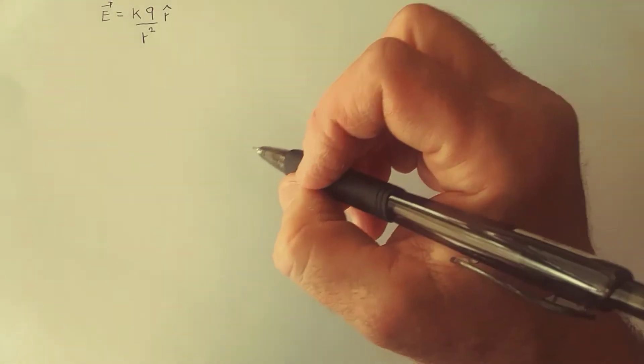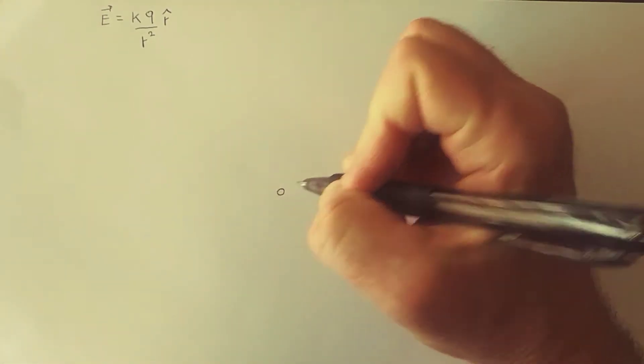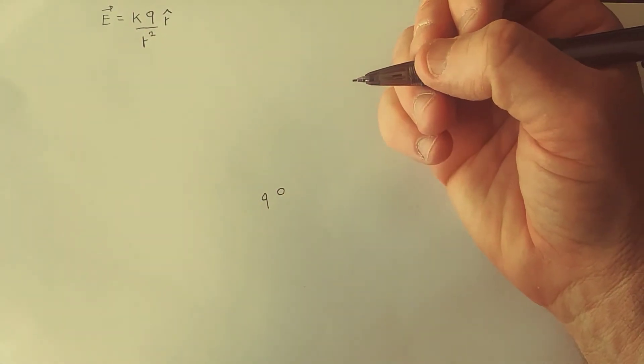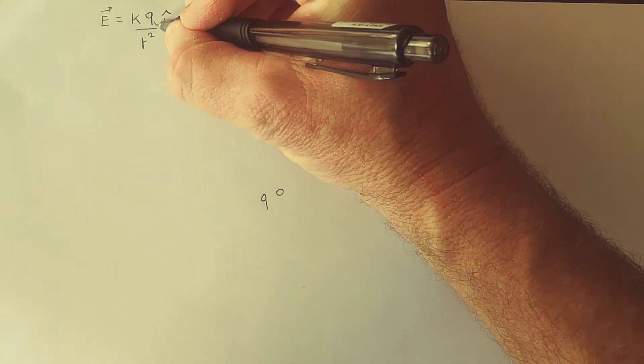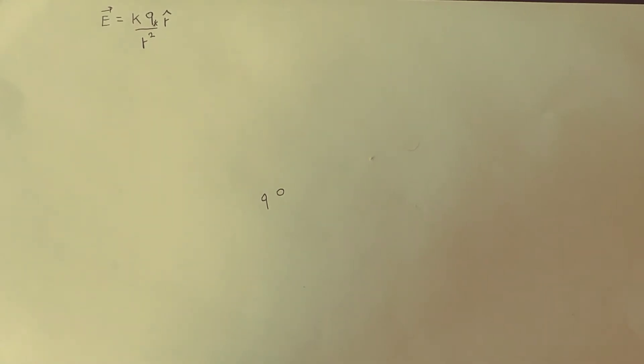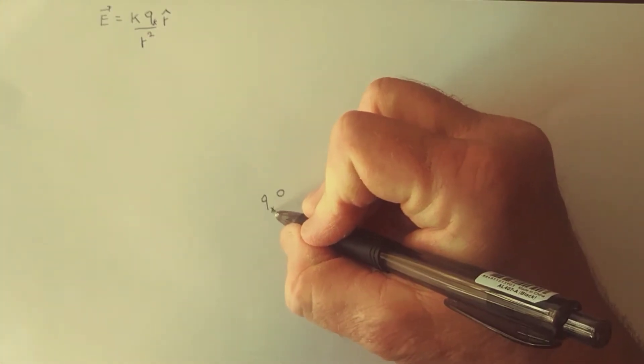Let's say that we place the particle that creates the field here, so here's a particle of charge Q, and let's just be more specific and call it Q star. In this case it's KQ star over R squared times R hat.